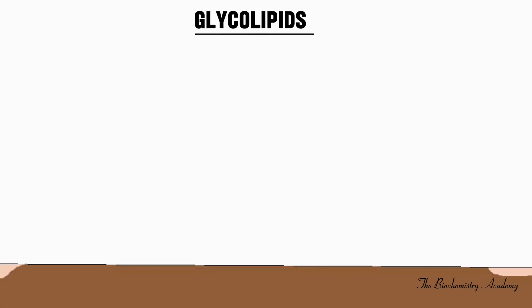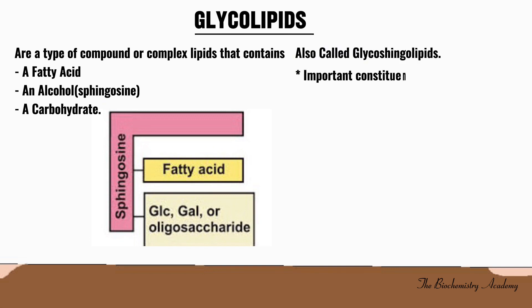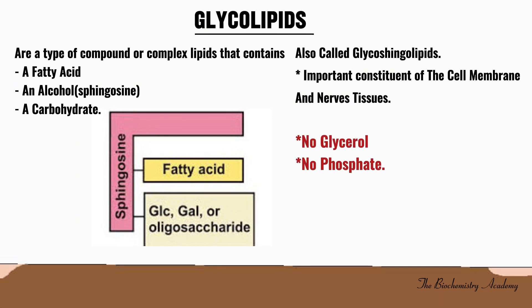Welcome to the Biochemistry Academy. In today's video we'll talk about glycolipids. Glycolipids are a type of compound or complex lipid that is composed of a fatty acid, an alcohol which is sphingosine, and a carbohydrate. Glycolipids are also called glycosphingolipids. They are important constituents of the cell membrane and the nervous tissues.